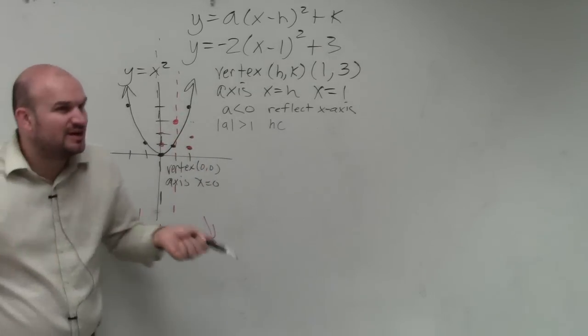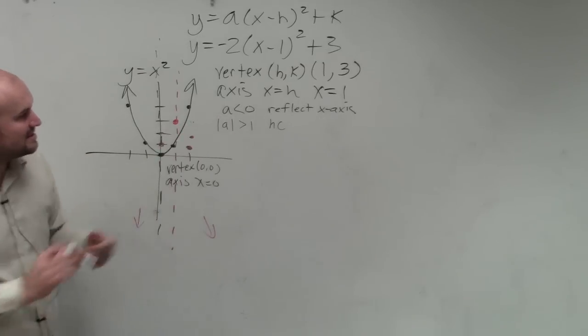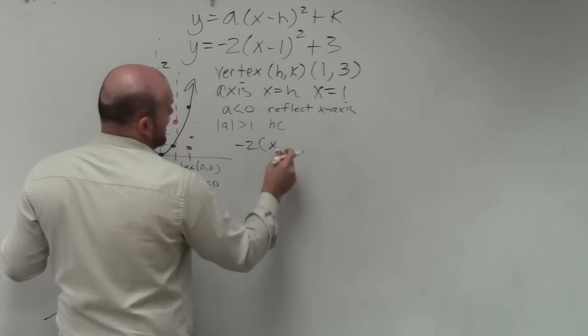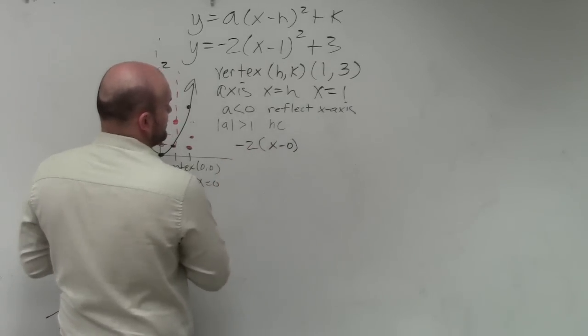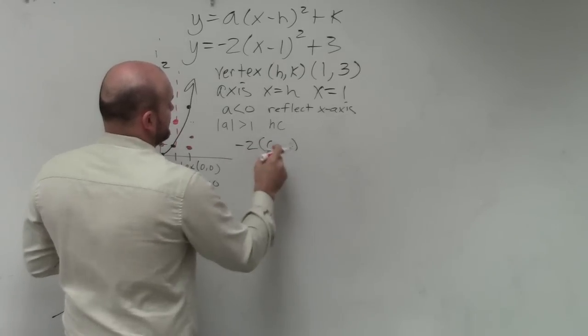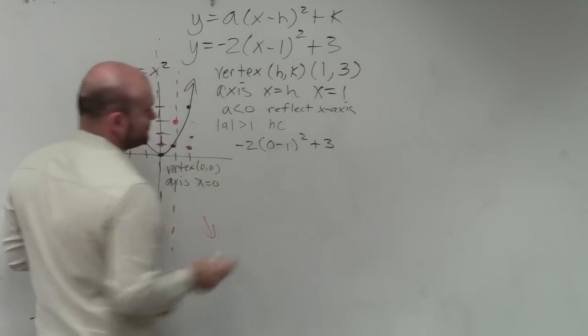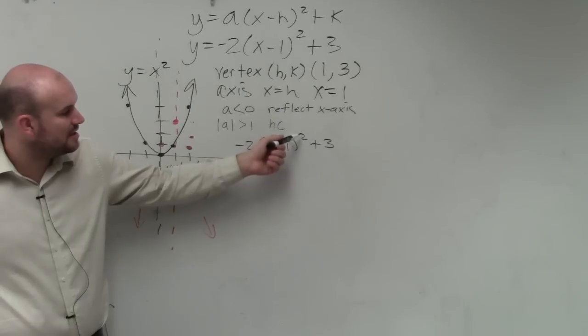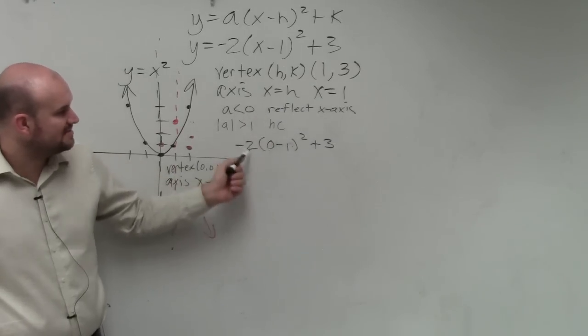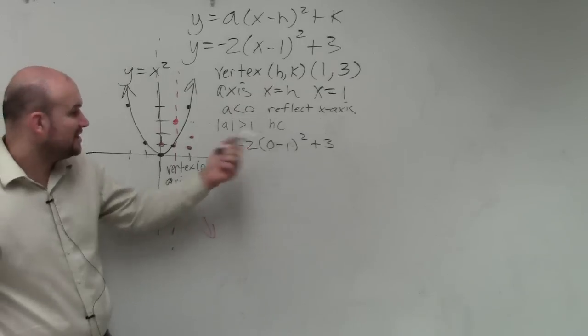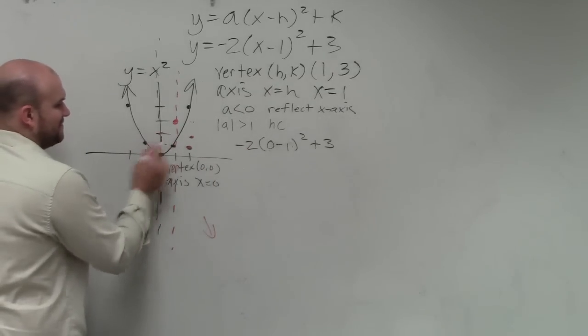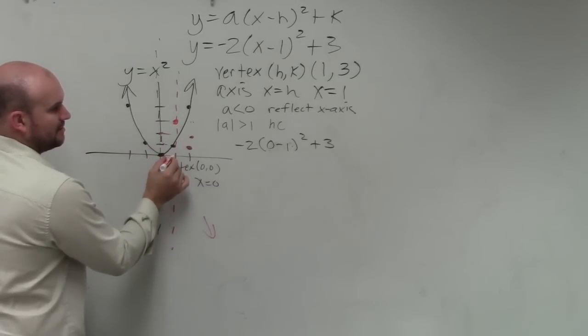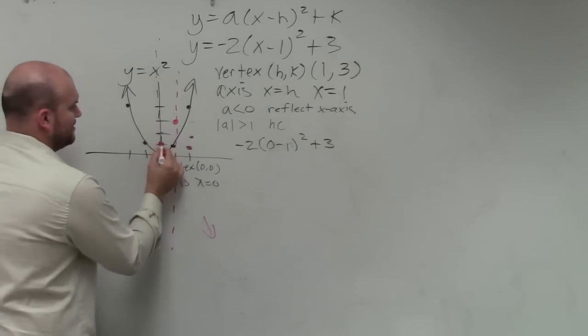And you can always check your answers, ladies and gentlemen, by just plugging in points. If you know here is your value, let's figure out what 0 would be. So negative 2 times 0 minus 1 squared plus 3. So if you plug this in, you get 0 minus 1 is negative 1. Negative 1 squared is 1. 1 times negative 2 is negative 2. Plus 3 is actually 1. So actually, if you plug that in, your point actually now becomes 0, 1. It is positive 1.